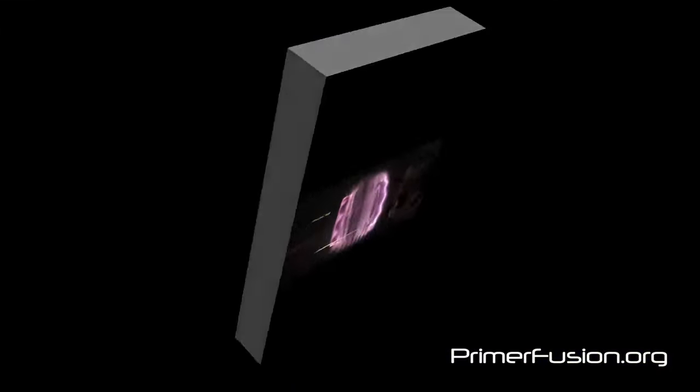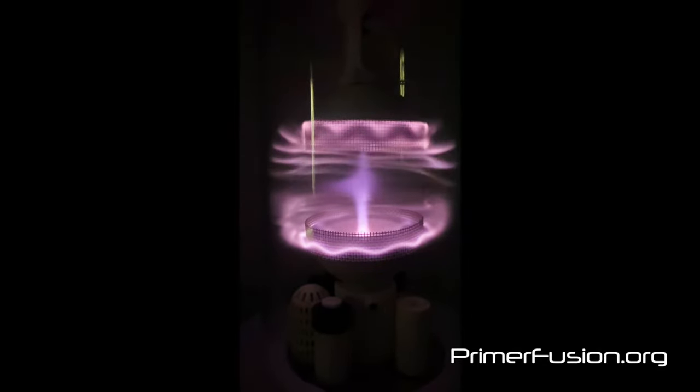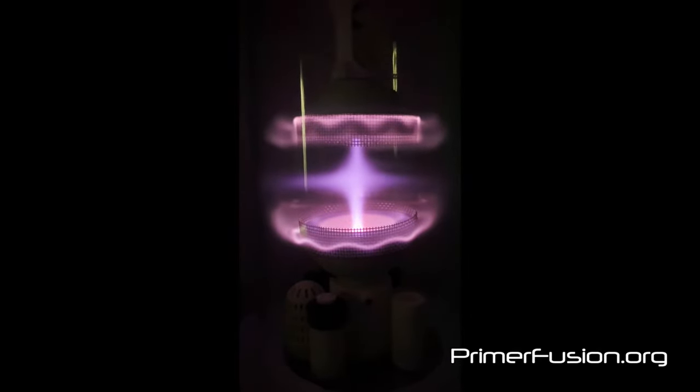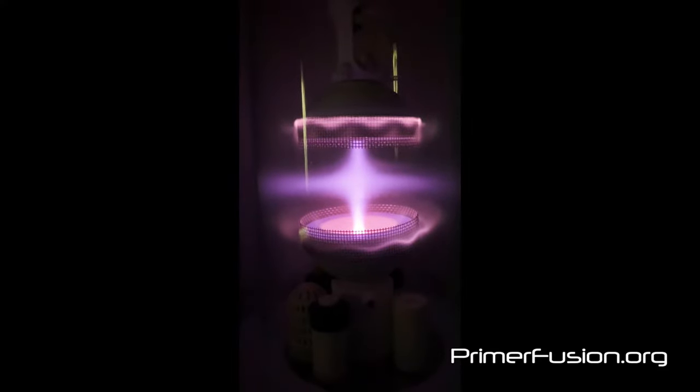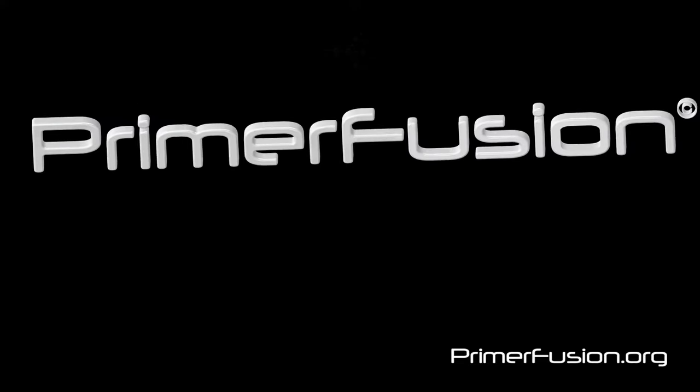The goal with Primerfusion is to generate electricity by directly capturing the charges produced when hydrogen and boron fuse. When fused with hydrogen, boron will produce enough energy to power the typical home for less than $10 per month.